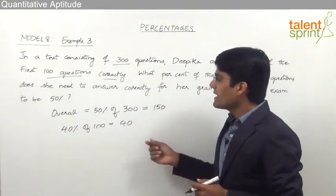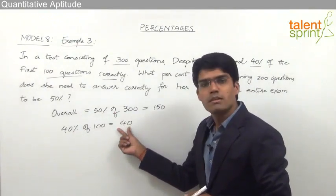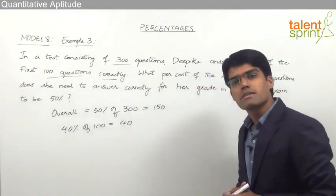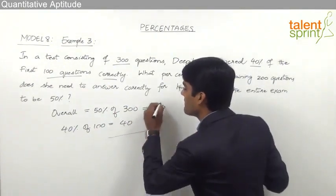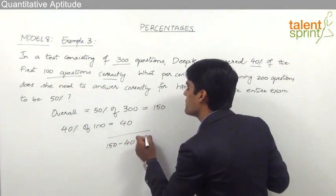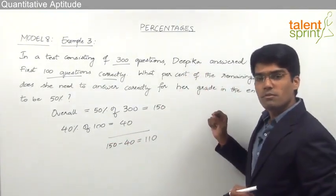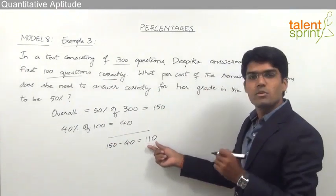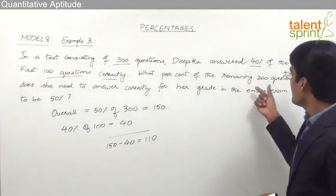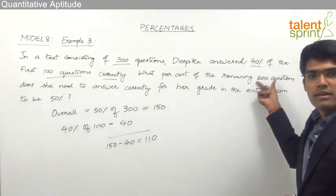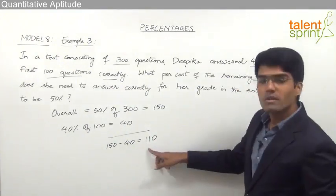Overall Deepika should answer 150 questions correctly, and she has already answered 40 correctly from the first 100. That means she needs 150 − 40 = 110 more correct answers. These 110 correct answers must come from the remaining 200 questions.